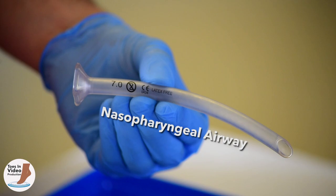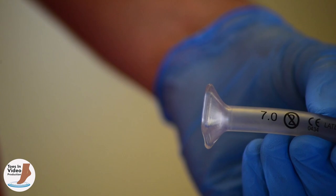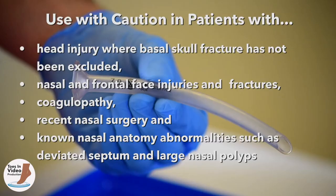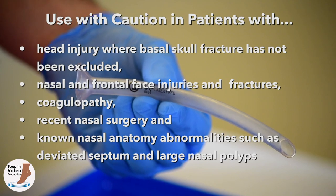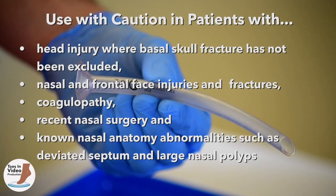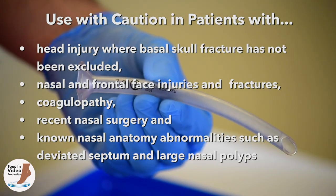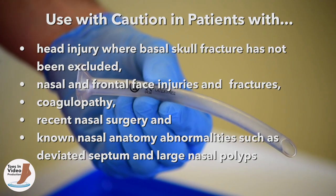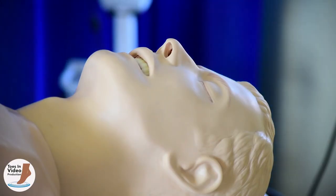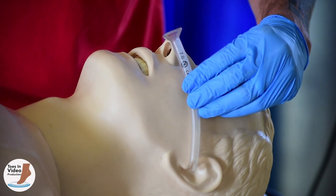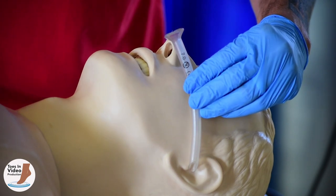The nasopharyngeal, or NPA, airway is another adjunct for basic airway management. It is a simple silicone tube with a bevel at one end and a flange at the other, and is well tolerated in semi-conscious patients. The device should be used with caution in patients with head injury where basal skull fracture has not been excluded, nasal and frontal face injuries and fractures, coagulopathy, recent nasal surgery, and known nasal abnormalities such as a deviated septum or large nasal polyps. Sizes 6 and 7 are suitable for most adults. The largest NPA that fits the nostril without blanching the capillary bed should be selected, and measuring from the tip of the nose to the tragus of the ear also gives an indication of the correct size.